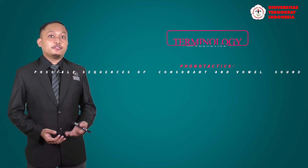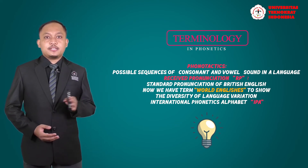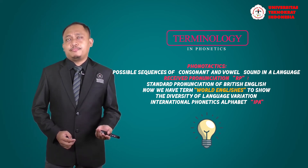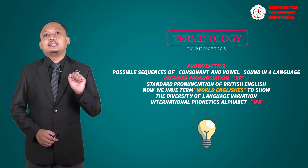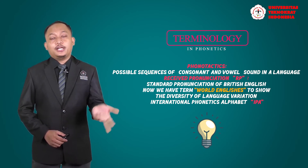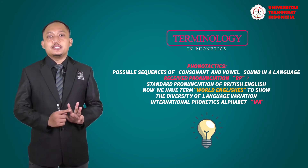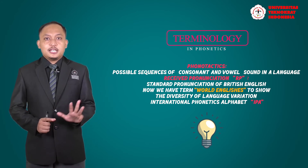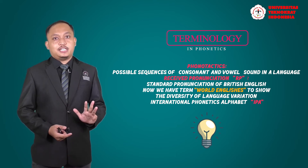Now we have phonemes, allophones, and next we are going to talk about phonotactics. Phonotactics involves analyzing certain words based on the classification of vowels and consonants. For example, the word 'work' consists of W-O-R-K: W is a consonant, O is a vowel, R is a consonant, and K is a consonant — so its phonotactic pattern is consonant-vowel-consonant-consonant.